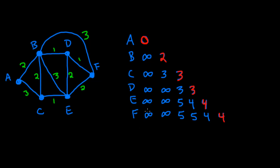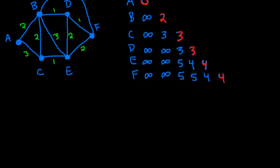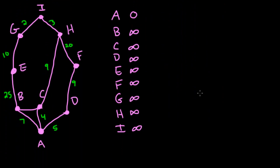If you feel like you're getting used to this algorithm, now is a good time to try a slightly bigger example. Here we have a graph with a few more vertices than before, and some of the edge labels are quite large. I've started the table with A as the source at zero, and the rest at infinity. One edge label was missing — it's a 2 right here. Now you should be able to solve this completely on your own. Pause the video and when you have a solution, continue.